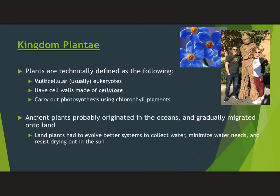Then the plant kingdom — a kingdom we understand a lot more, kind of like animals. Plants are multicellular eukaryotes with cell walls made of cellulose, and they carry out photosynthesis using chlorophyll. We think plants are older than animals — they originated in aquatic environments and probably originated when the earth was completely covered in water. Over millions of years, plants evolved to have water collection systems so they could grow on land with systems that allowed them to gather water from their surroundings.